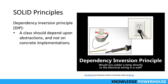The last principle is Dependency Inversion. A class should depend upon abstractions, not on concrete implementations. Consider the analogy of an electric socket and a lamp: you don't want to permanently solder the lamp directly into the socket. Instead, you use a plug — a plug-and-play mechanism — so you can connect or disconnect the lamp as needed without breaking the circuit.